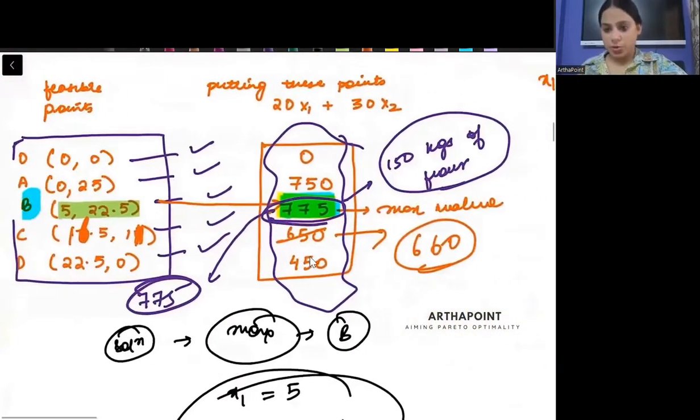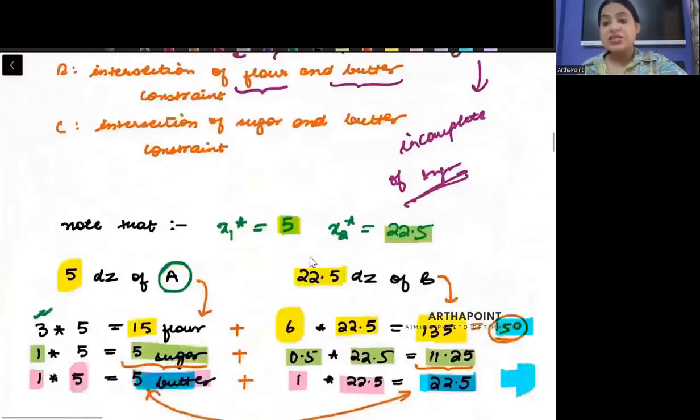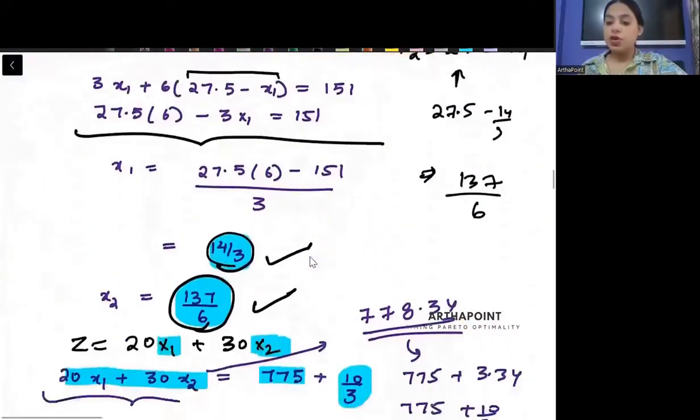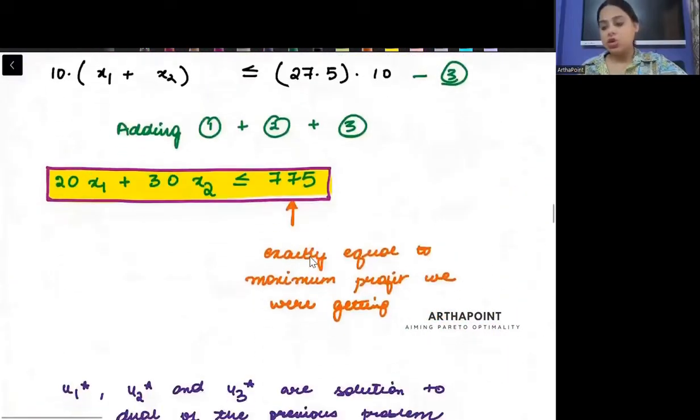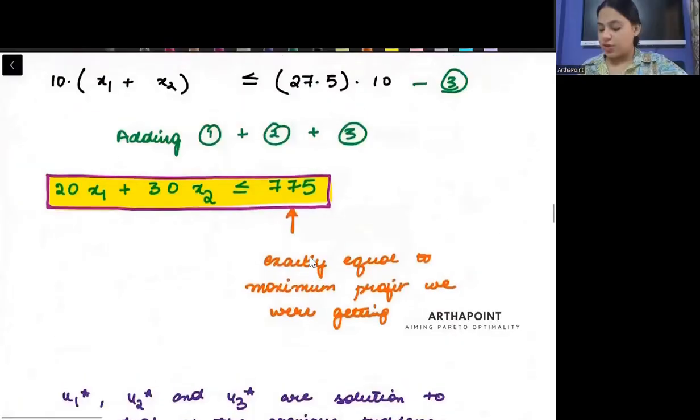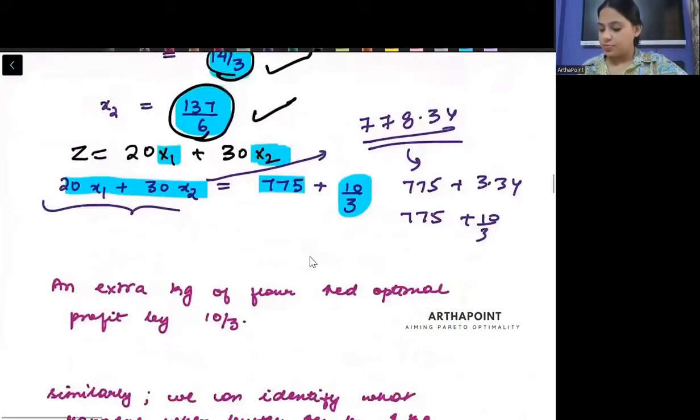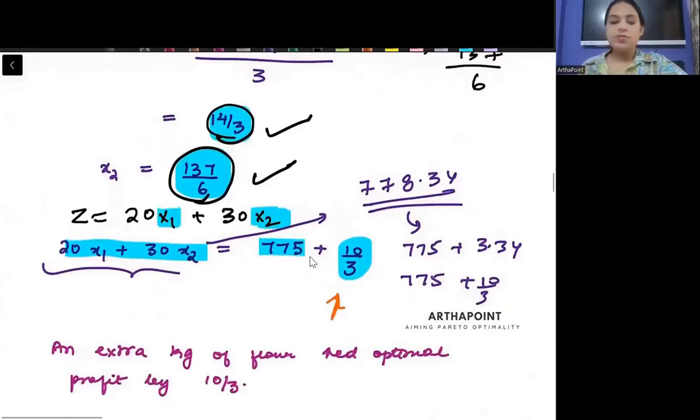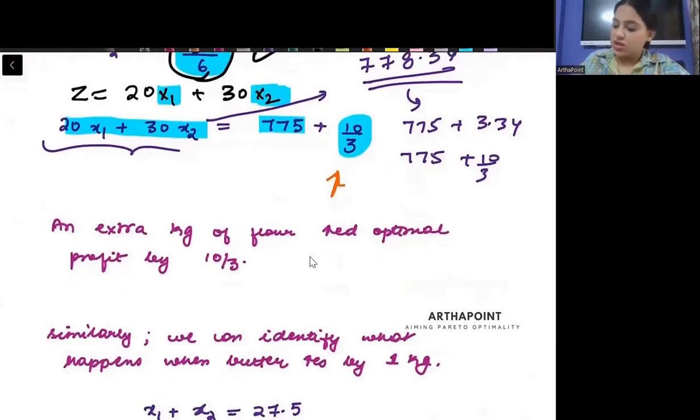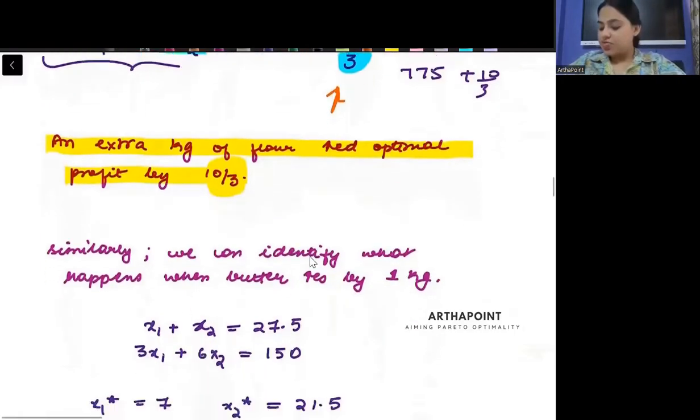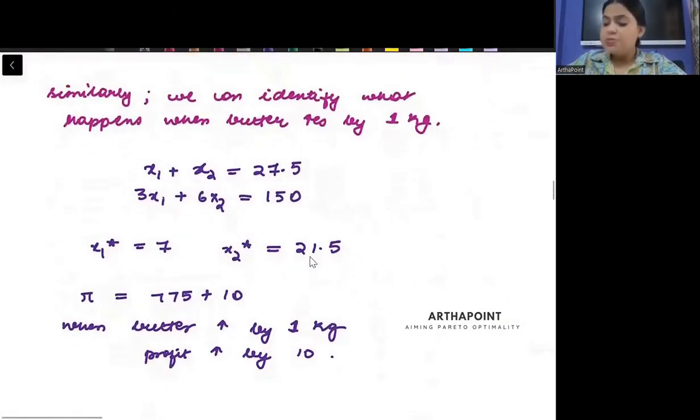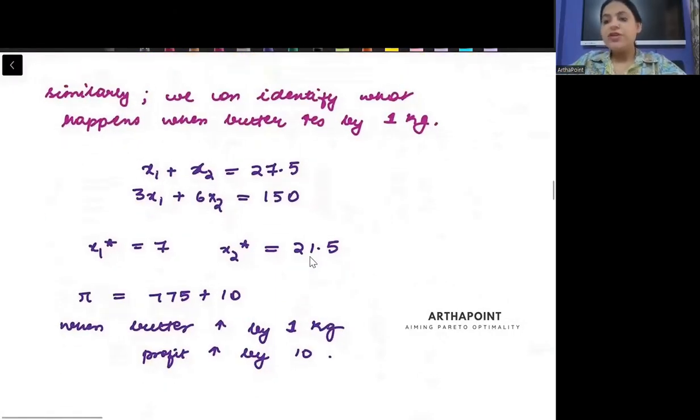Increase of flour by one unit increases the profits or the revenue by 10 by 3 units. This is what I have done here. This is saying that an extra kg of flour increases your optimal profits by 10 by 3 units. Similarly, you can identify different things.